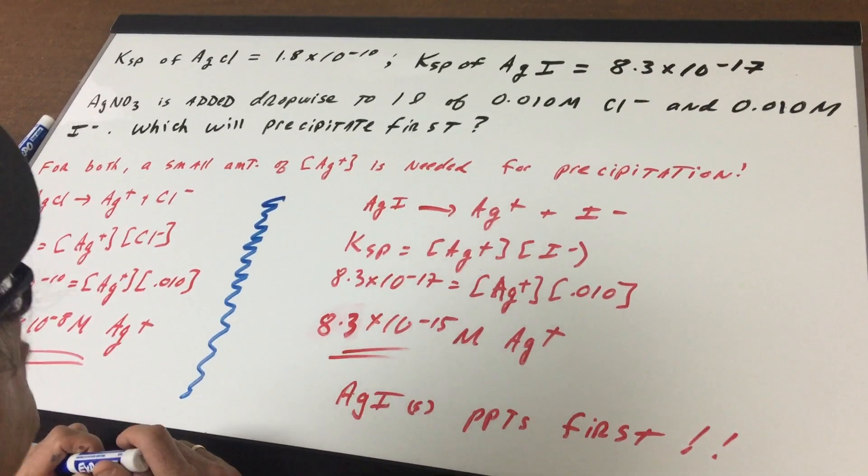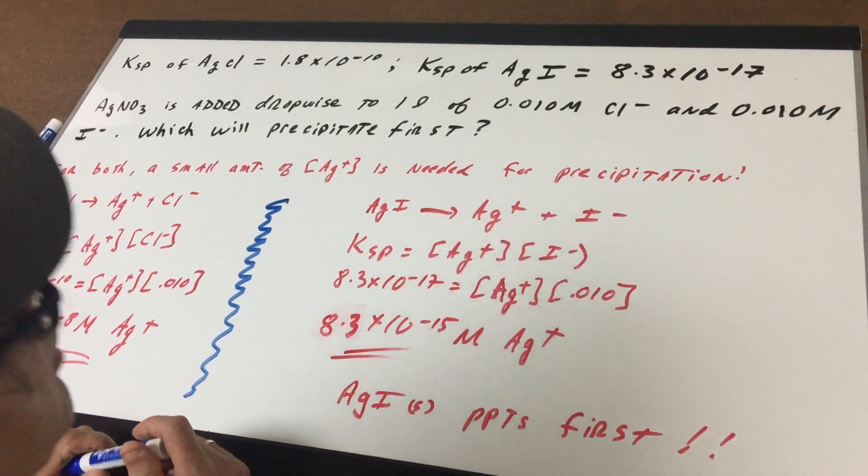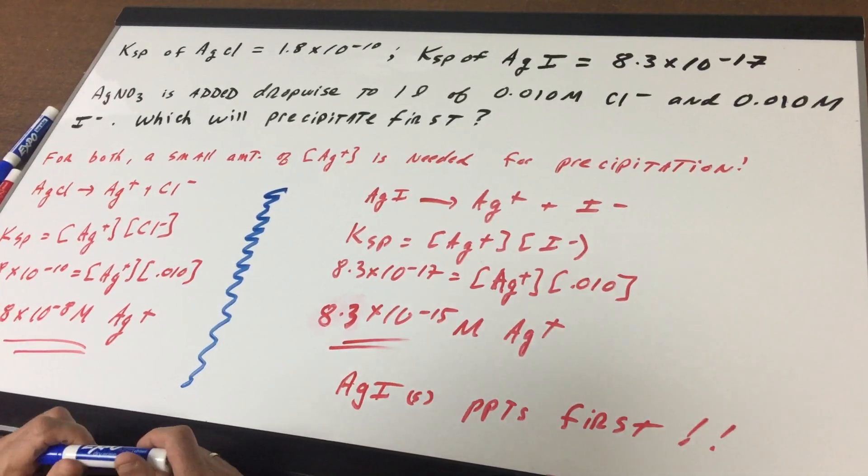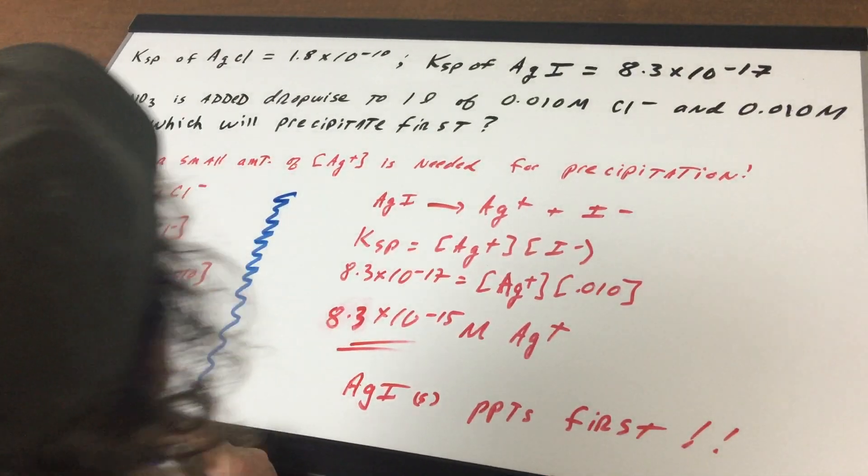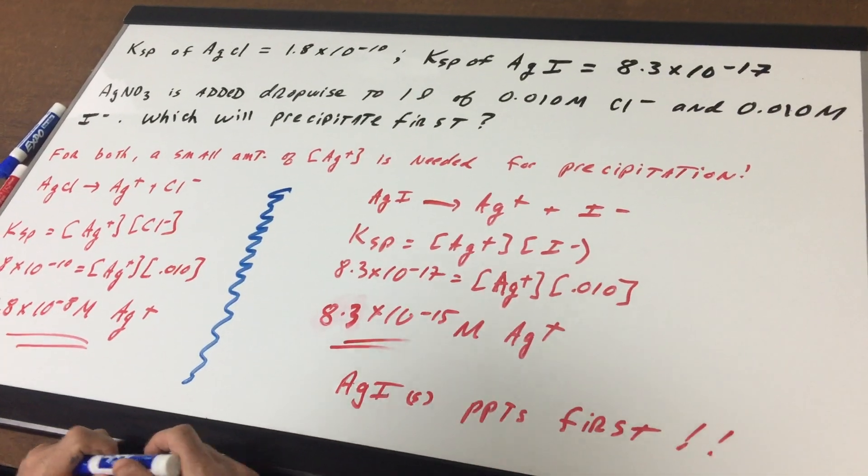Silver nitrate is added dropwise to one liter of 0.010 M chloride and 0.010 M iodide solution. Which will precipitate first?